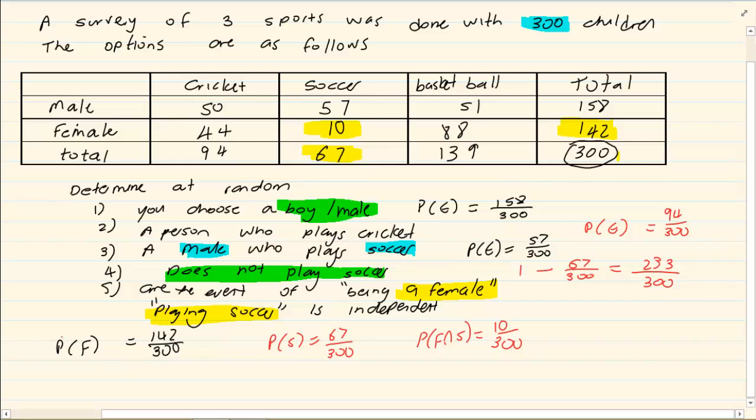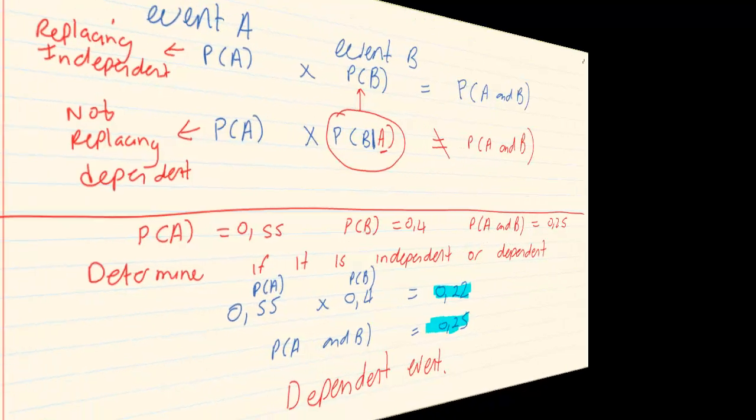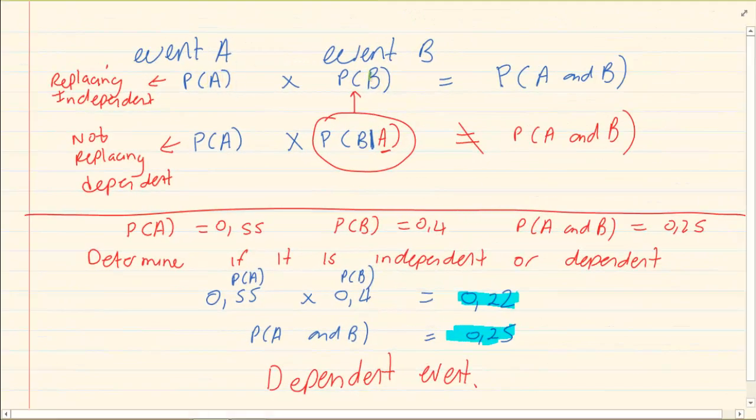Now let us take the probability of a female. So the probability of a female times the probability of soccer. So the probability of a female times the probability of soccer is equal to... You can clearly see that it is not the same. When we said P(A) times P(B) it was not equal to P(A and B).